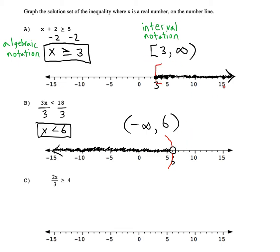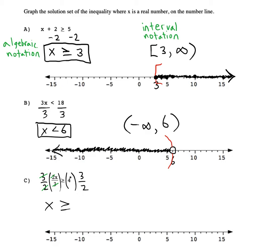Here 2x over 3 is greater than or equal to 4. We can use the idea of multiplying by the reciprocal to cancel the two-thirds, so let's multiply both sides by 3 halves. The 3 above cancels with the 3 below, and the 2 above cancels with the 2 below, leaving x alone. Then we bring down our inequality sign and multiply 4 times 3 halves — that's 12 halves — so we have x is greater than or equal to 6.